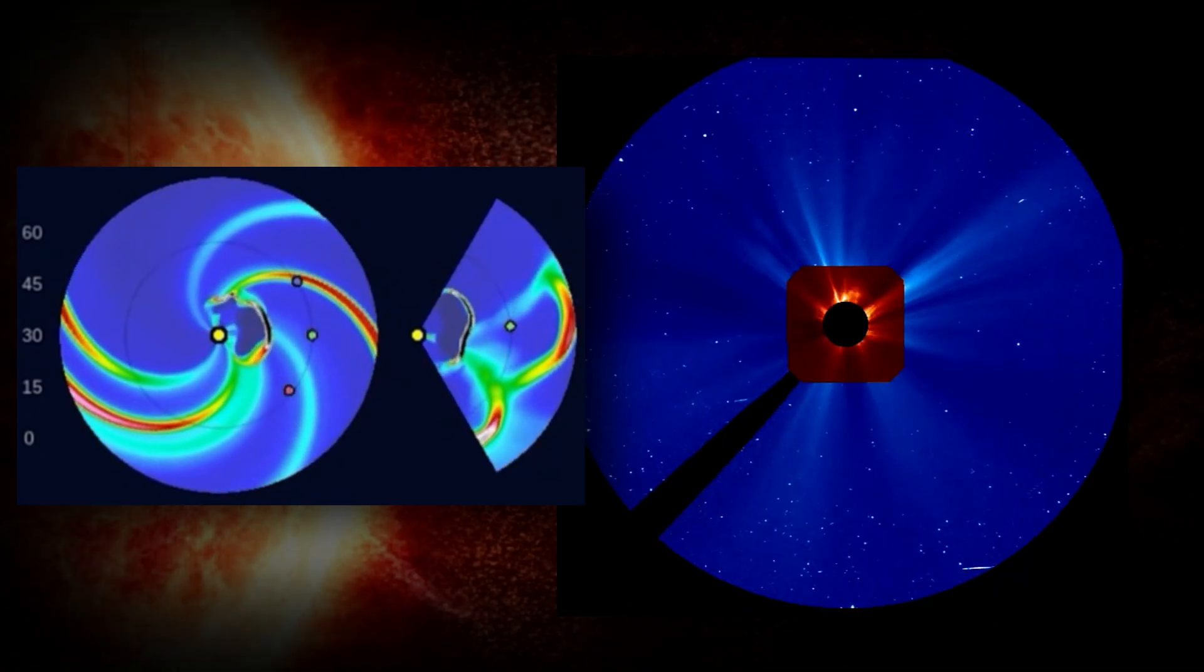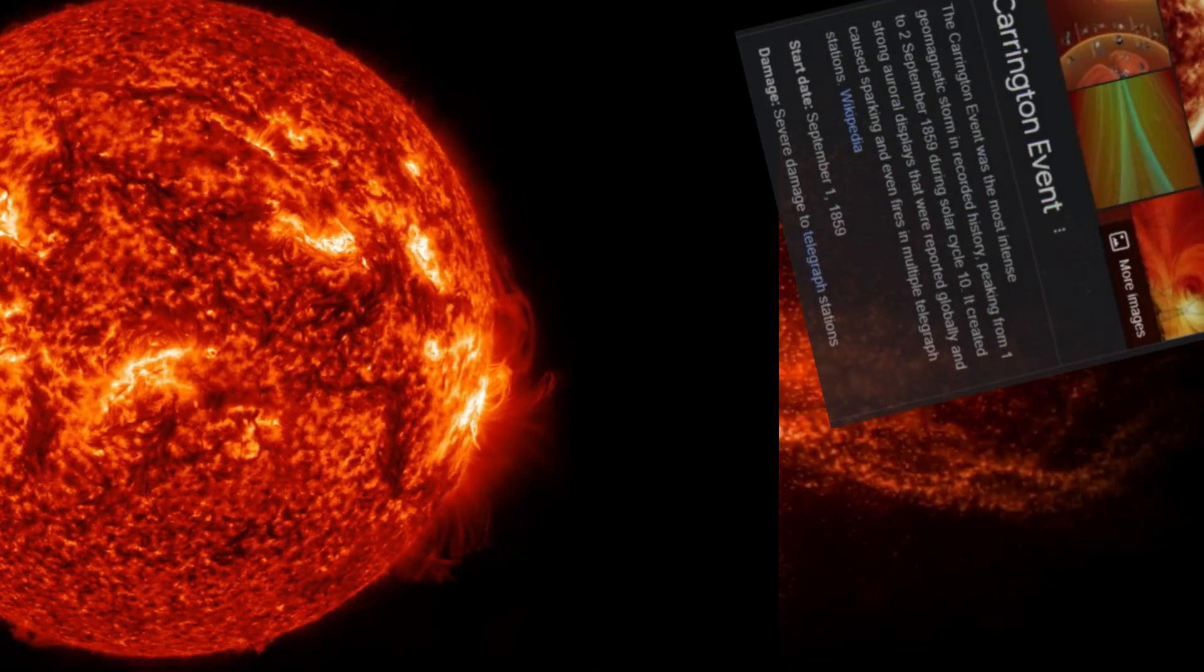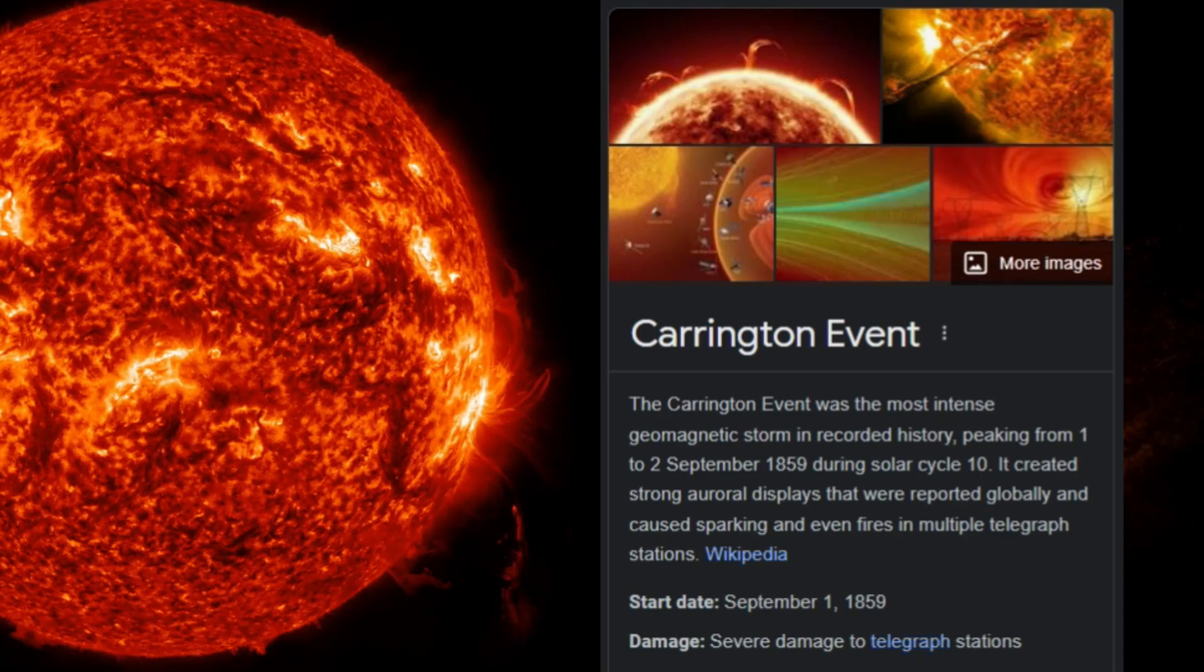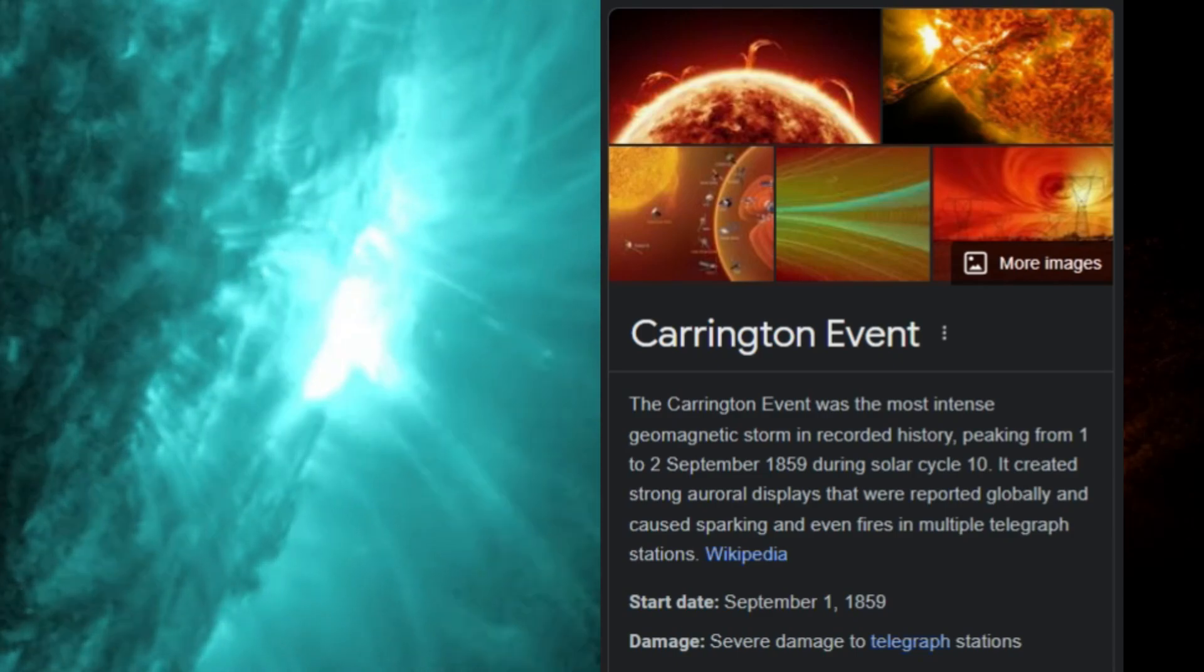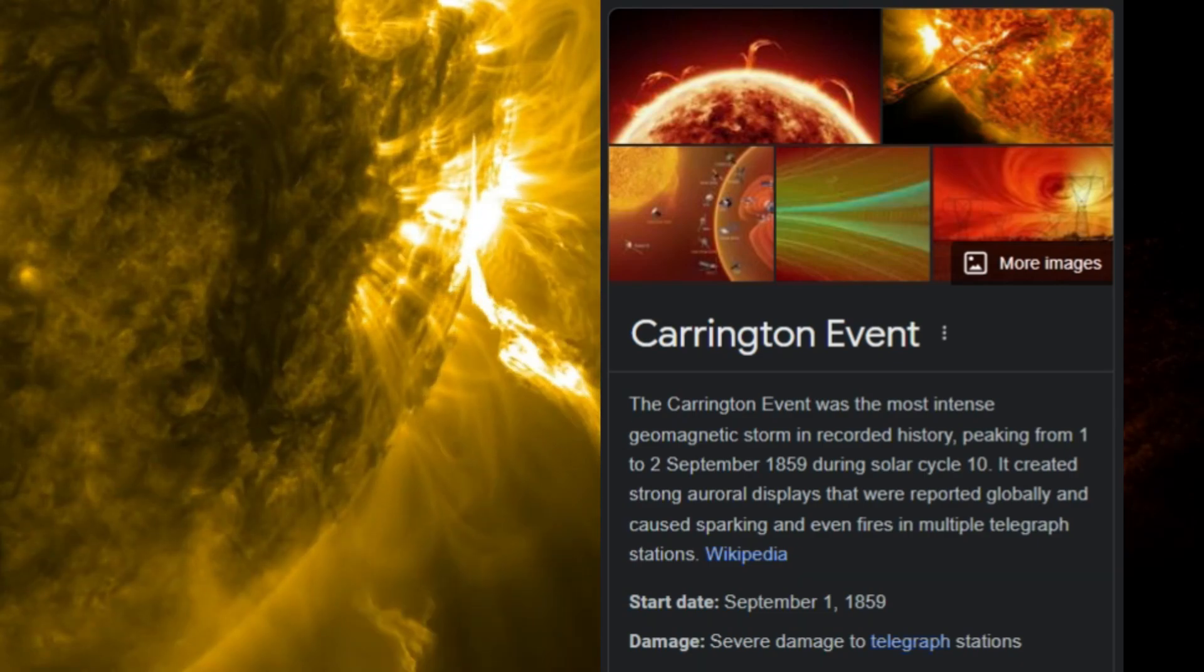In short, the Carrington Event was the most intense geomagnetic storm in recorded history, from the first to the second of September in 1859 during solar cycle 10. Not only did this create strong auroras, but it caused fires and sparking over multiple telegraph stations.